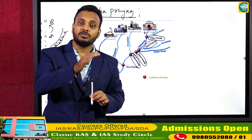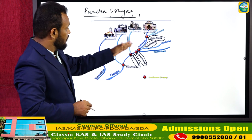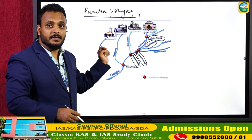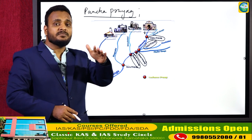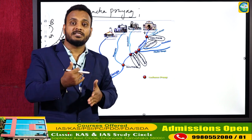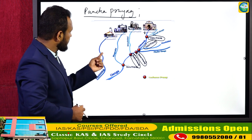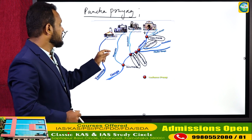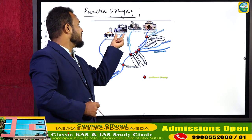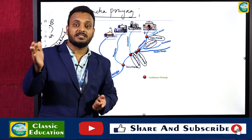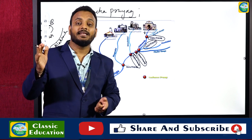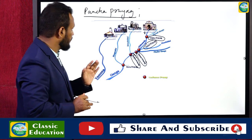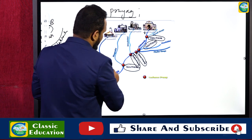Until Devaprayaga, we do not call those streams Ganga river. Rather, they are known by different names like Vishnu Ganga, Dhauli Ganga, Nandakini, Pindar Ganga, Mandakini, Bhagirathi, and Alaknanda. These many synonyms exist for Ganga before it originates from Devaprayaga. The Bhagirathi originates from Gangotri Glacier at Gomukh, Uttarkashi district, Uttarakhand.